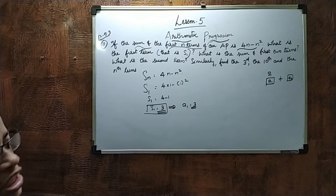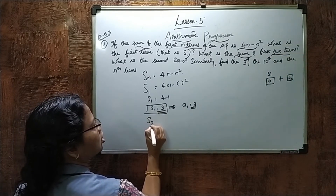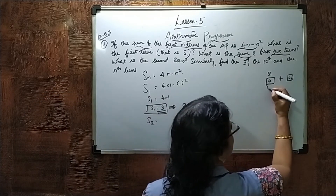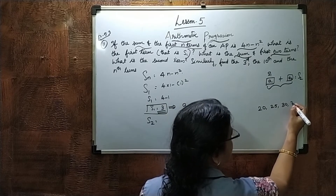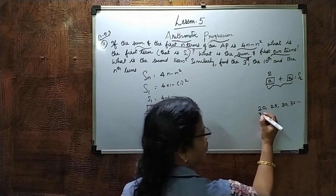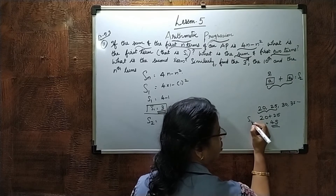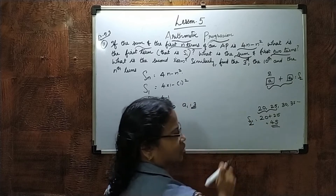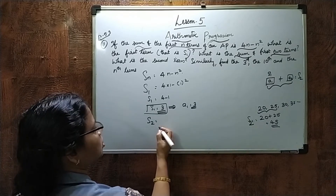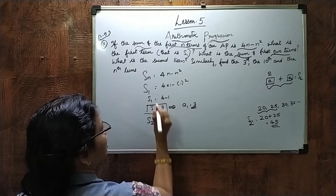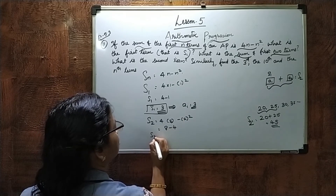For the sum of the first two terms, we find S2 by substituting N equals 2: S2 equals 4 into 2 minus 2 squared, which is 8 minus 4, so S2 equals 4. The second term A2 equals S2 minus A1, which is 4 minus 3, so A2 equals 1.